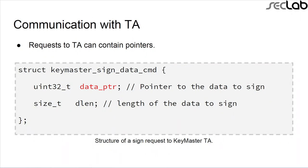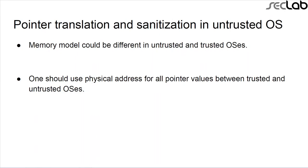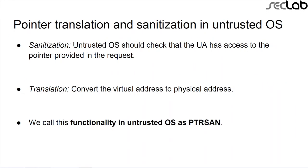This is a sample request sent by an untrusted application to a trusted application. The request contains two fields: a pointer to the data and the data length. This is a sign request asking the Keymaster trusted application to sign the data pointed to by these fields. However, there's a problem — the memory model may differ in the untrusted OS, so pointers must be converted to physical addresses before being sent to the trusted OS. This is done by first performing pointer sanitization, or PTRSAN.